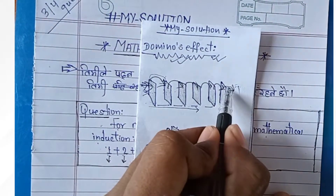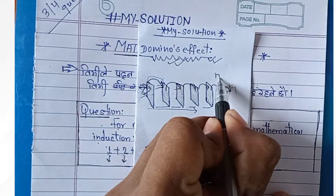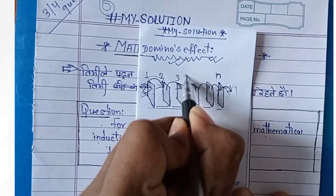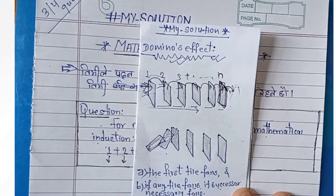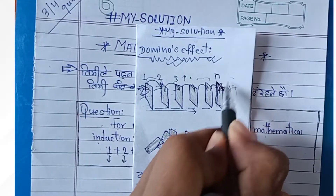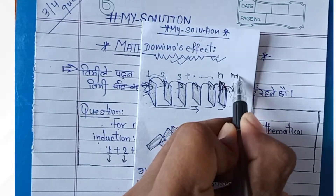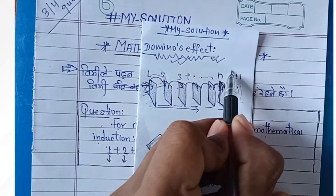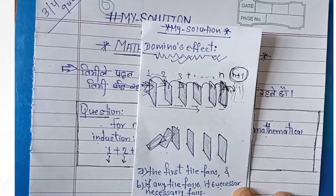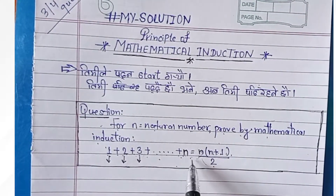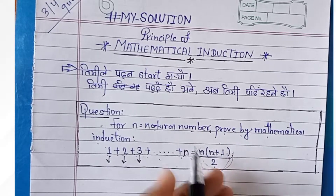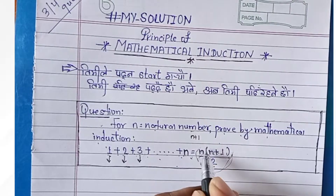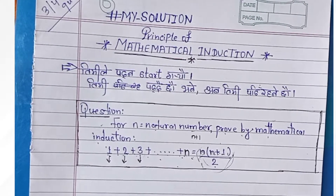The tiles represent terms: 1, 2, 3, dot dot dot, n. If the n-th tile falls, then the n plus 1 tile falls as well. We need to prove this relationship holds for n plus 1. So let's begin the solution.